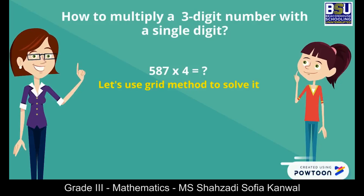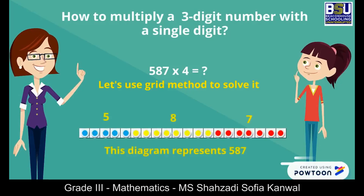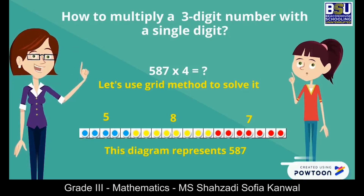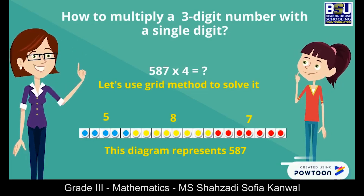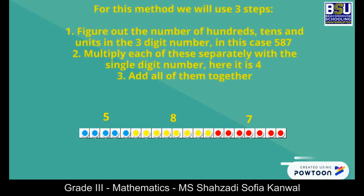But teacher, what is the grid method? I will explain it to you. Look at the diagram representing the number 587 with 5 blue dots, 8 yellow dots and 7 red dots. For this method we will use 3 steps. First we will figure out the number of hundreds, tens and units in the 3-digit number — in this case 587. Then we will multiply each of these separately with a single digit number. Here it is 4.